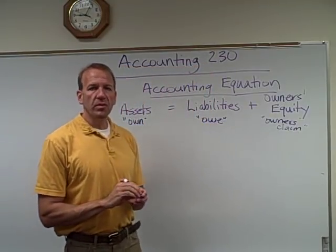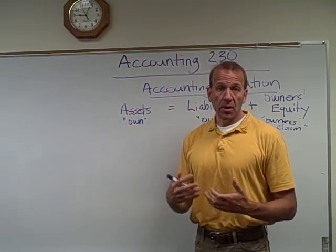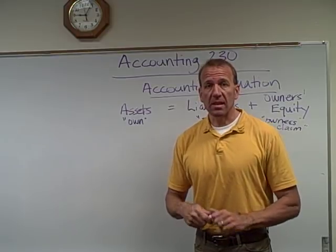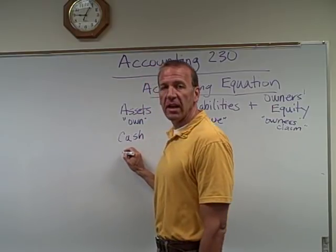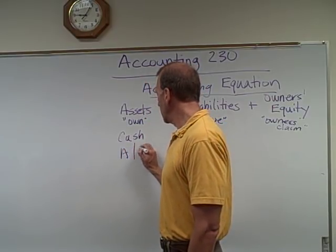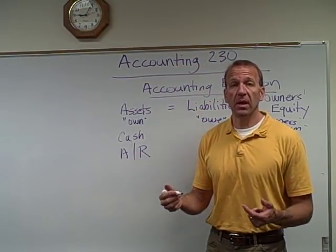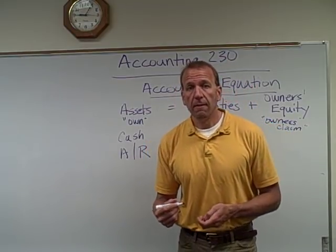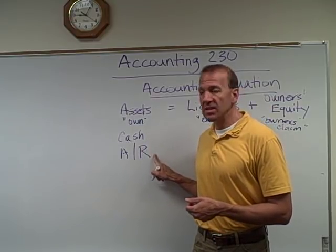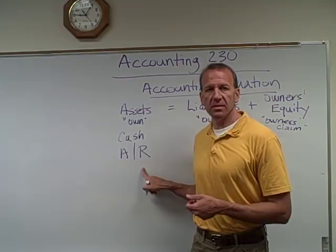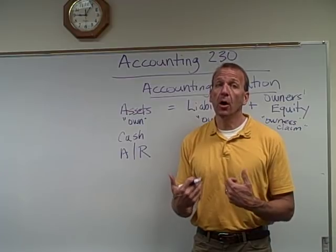Let's go over some examples of each category. Assets are things that we own — we're talking about corporations, businesses. The most common would be their cash. Then accounts receivable — just like IOUs, when people owe us money. If we sell something and our sales are on credit, then people owe us money. They haven't given us the cash yet, but they owe us money, so accounts receivable is an account where we're going to receive the cash later.